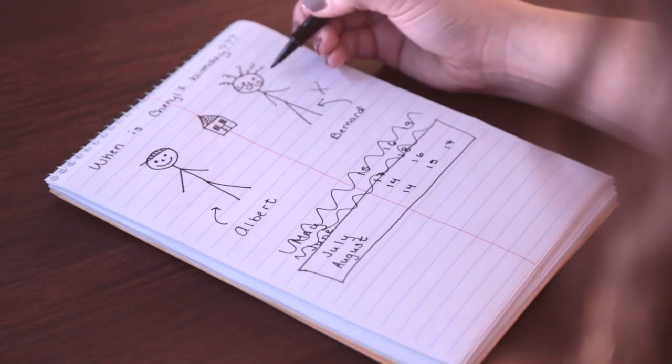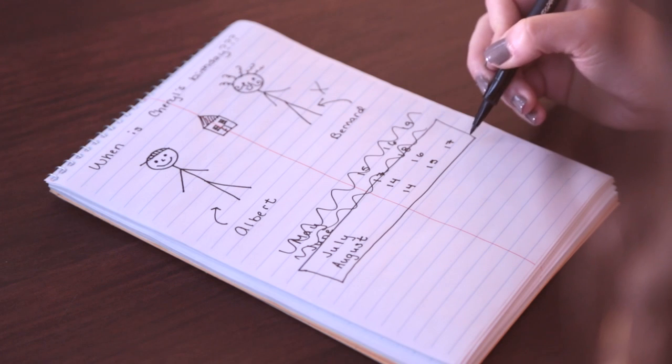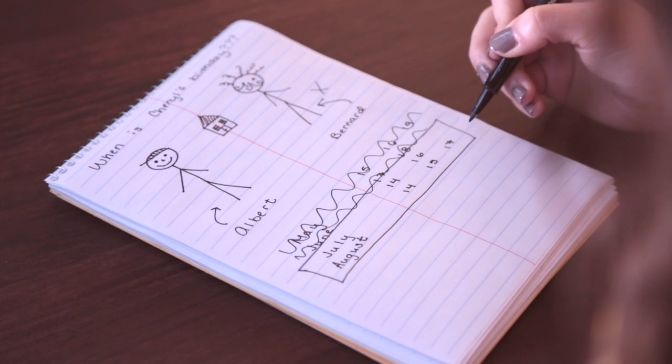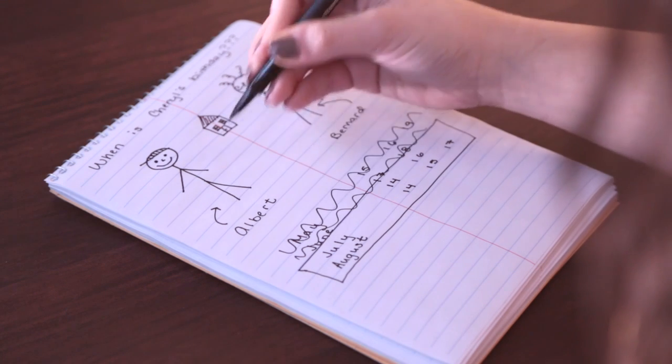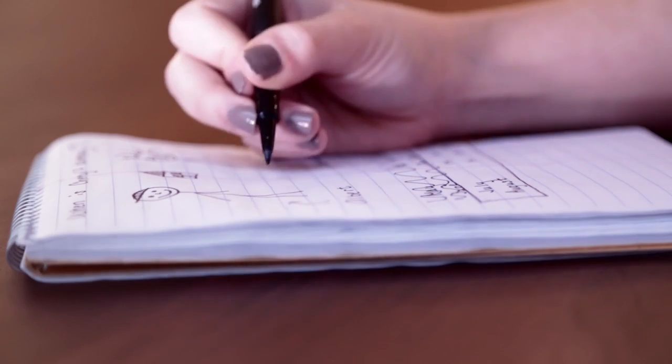Remember, all Bernard has to start with is a day. But like us, he now also knows the month can't be May or June since Albert knows he can't have the answer already. He arrives at the answer.